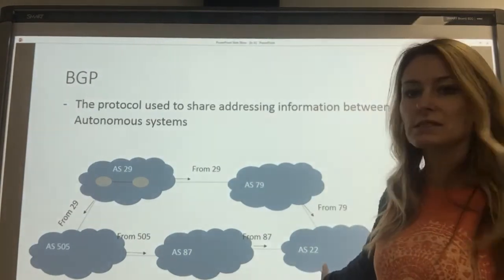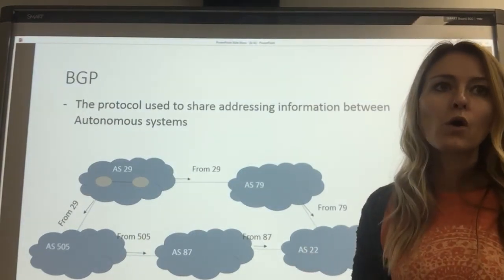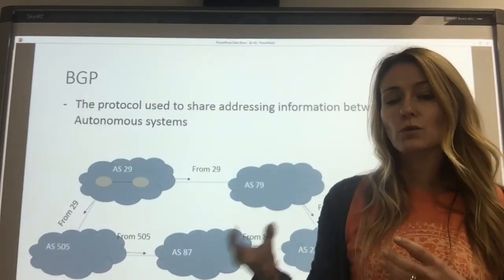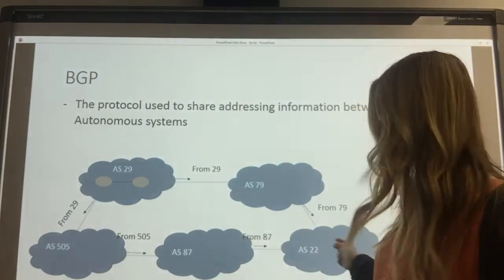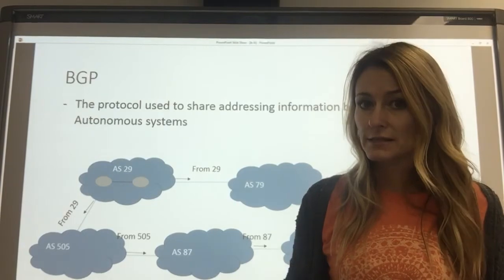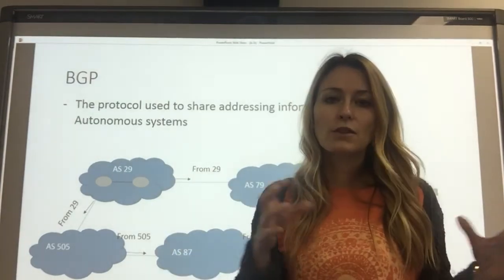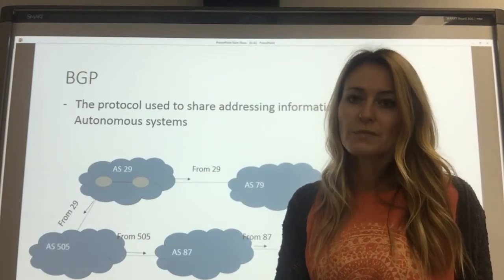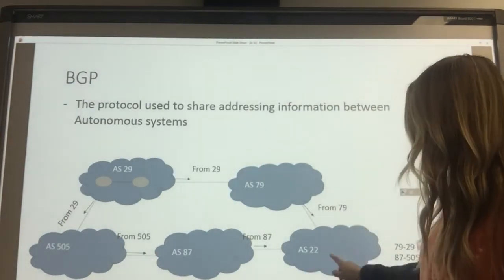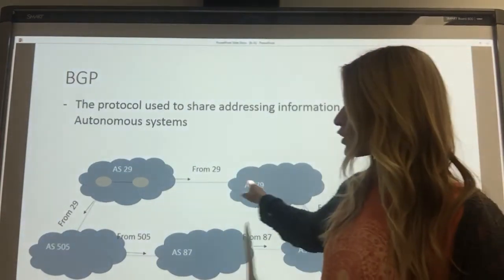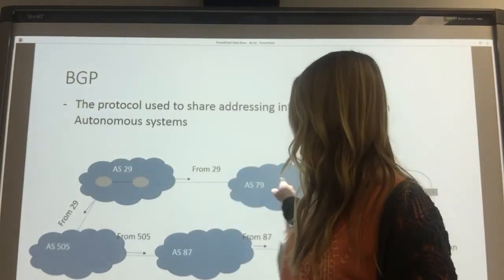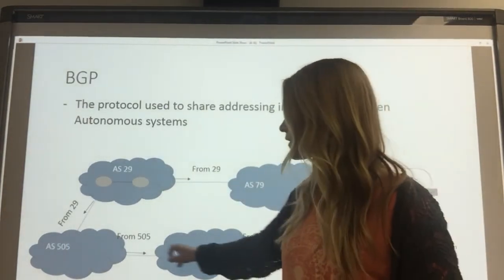So how does autonomous system 22 know where to send its data when it gets a packet that needs to go to one of those IP addresses? It's got two routes — it could go this way or it could go that way. Because this block of address space got sent out from its sender, the autonomous system that received it knows who sent it to them, so it's easy to track which route has the smallest metric. Autonomous system 22 can see that going this way gets there quicker — we'll say two hops versus three hops going the other way.